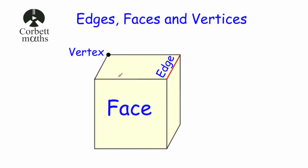So here we've got a cube. If we start off with its faces, it has got six faces. And if you consider a dice, a dice has got six faces. A face is the individual surfaces of the three-dimensional shape. So if we look at this cube, it has got six squares: a square at the front, on the top, on the back, on the bottom, on the right-hand side, and on the left-hand side. So a face is an individual surface of the three-dimensional shape.